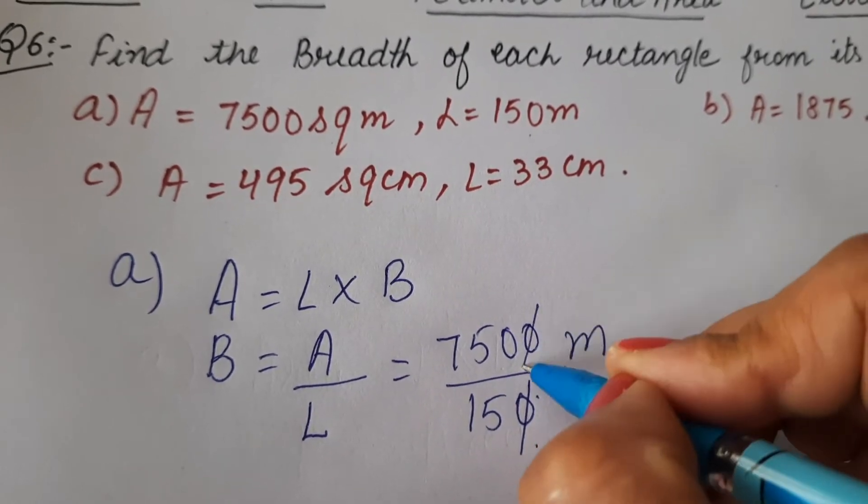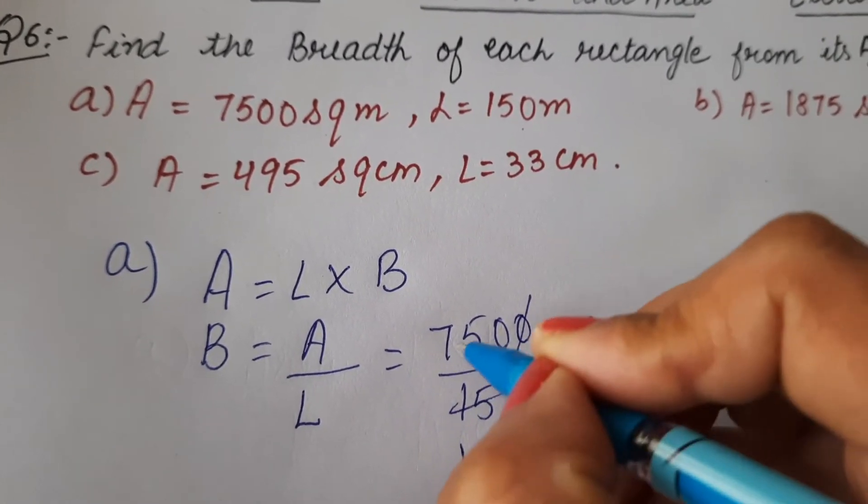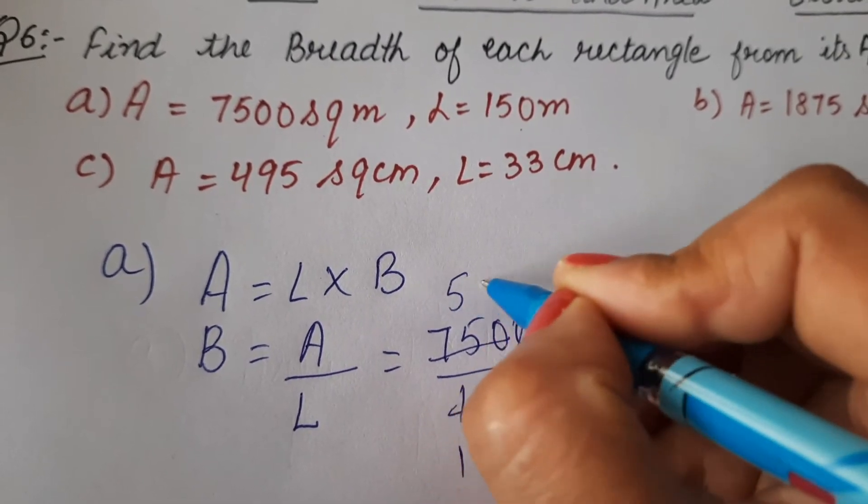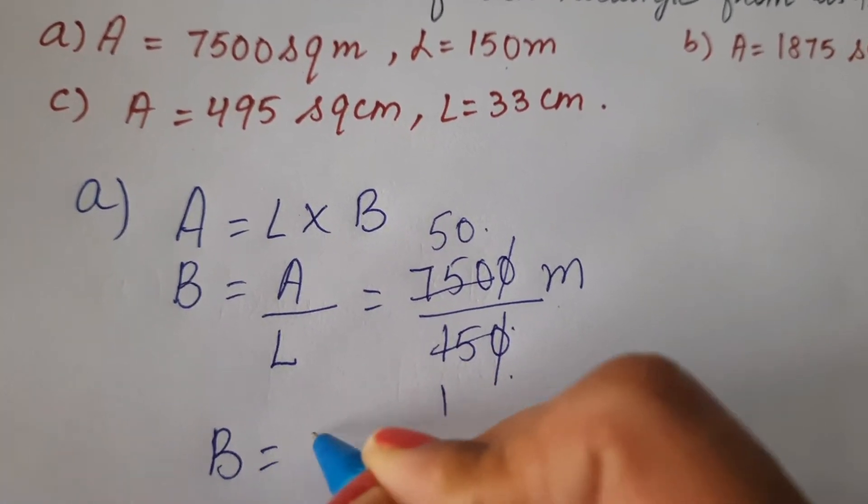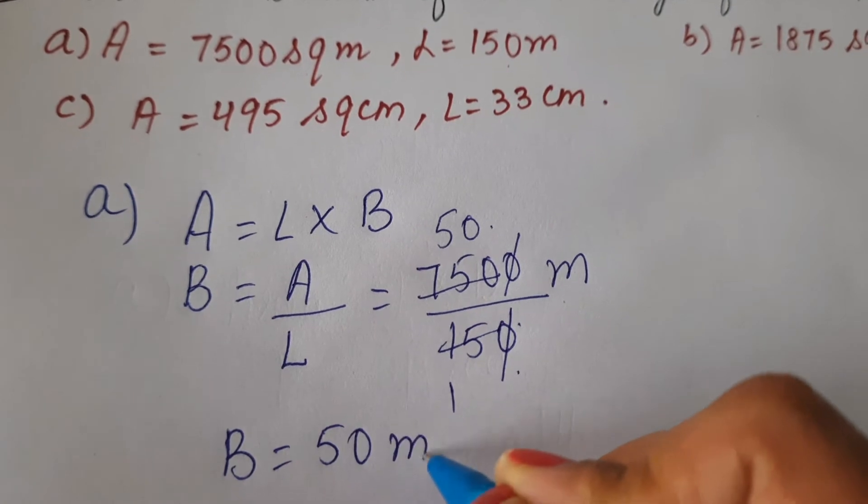This zero and this zero cancel out. 15 ones are 15. 15 fives are 75 and 0. So breadth will be 50 meters. This is how we find the breadth of rectangle.